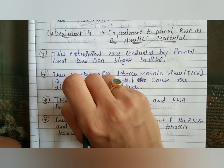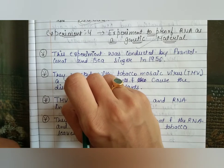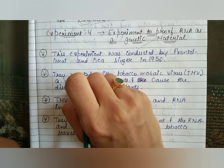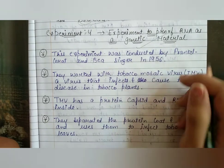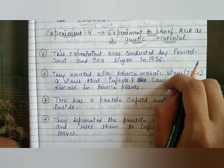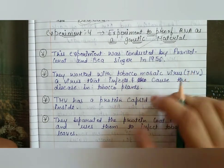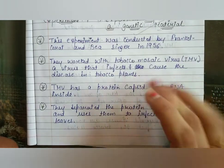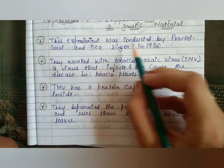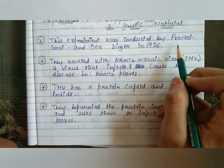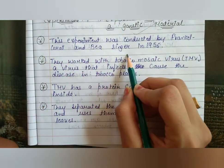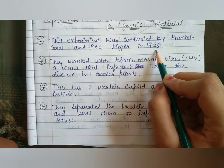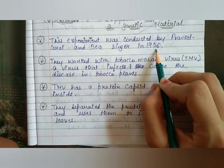Hello friends, welcome to Biotech World. In today's video we will study about an experiment which led to the discovery of RNA as a genetic material. This experiment was conducted by Frankel-Conrat and B. Singer in 1956.